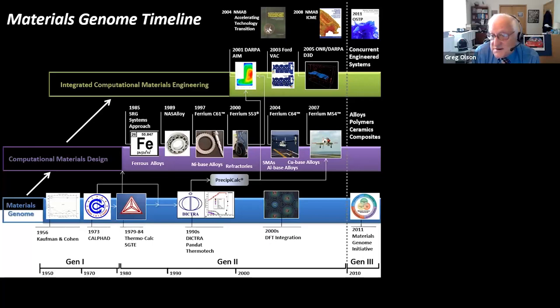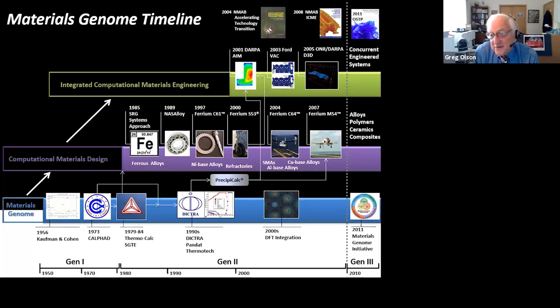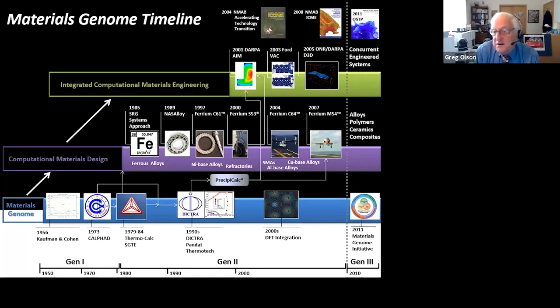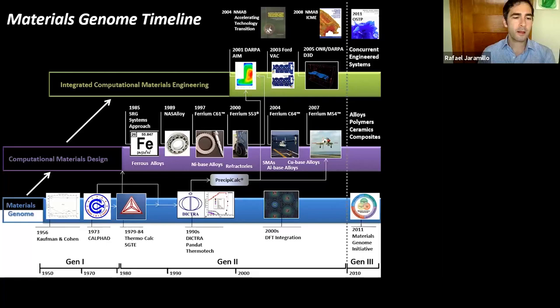It is very clear the materials genome we have is in fact the CALPHAD database system, whose origins go back to Kaufman and Cohen at MIT in the 1950s with the calculation of the iron-nickel phase diagram. The CALPHAD acronym is based on Calculation of Phase Diagrams, which was coined to distinguish it from a technique called PHACOMP at the time — that tried to estimate solubility limits in alloys from the attributes of a single phase. CALPHAD acknowledges that solubility is really based on phase competition, represented by phase diagrams in the equilibrium limit.